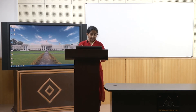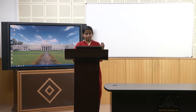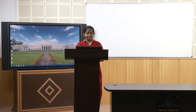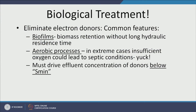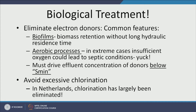However, in extreme cases where oxygen is insufficient — and aeration is an expensive step — we might lead to septic conditions where water becomes foul. We must drive the effluent concentration of electron donors below S_min, the minimum substrate required for microbes to grow in the distribution network. This requires rigorous treatment, and we want to avoid excessive chlorination for the reasons mentioned.